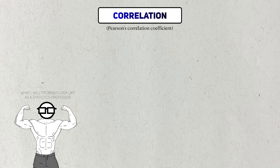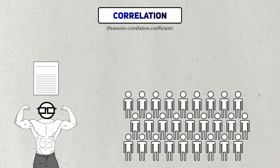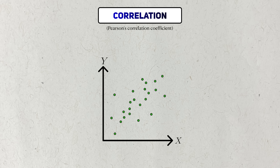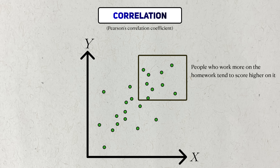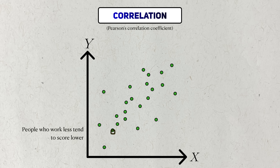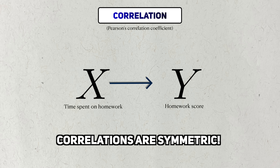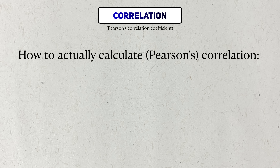This type of correlation focuses on the linear association between two random variables. Let's say I'm a statistics professor — very unlikely, but bear with me. I've given my class a homework assignment and collected some data. One variable is the amount of time a student works on the homework, and the other is the score they actually get. People who spend more time on the assignment tend to have higher scores, and people who barely work on it tend to score lower. This is a positive association, and the relationship is symmetric.